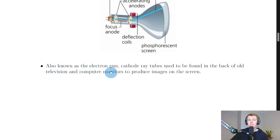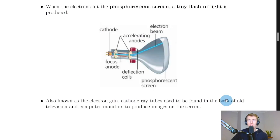Also known as the electron gun, cathode ray tubes used to be found in the back of old television and computer monitors to produce images on the screen. That's why these monitors used to be so big and wide with a large back—because they had this cathode ray tube inside, which was actually producing the color images on the screen.